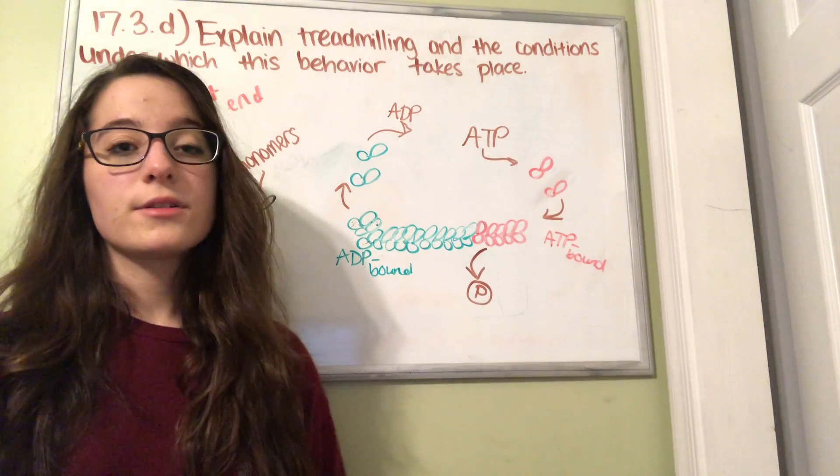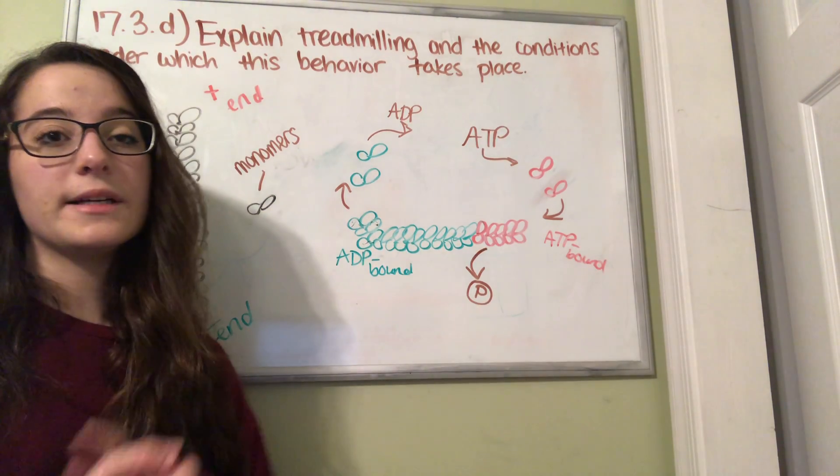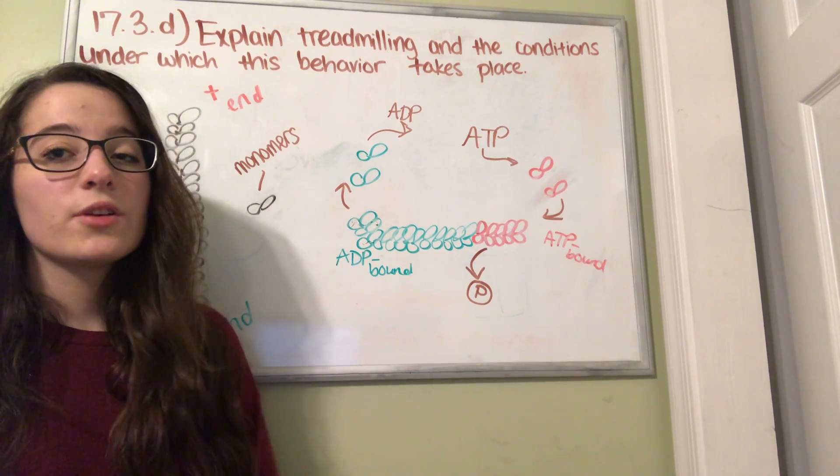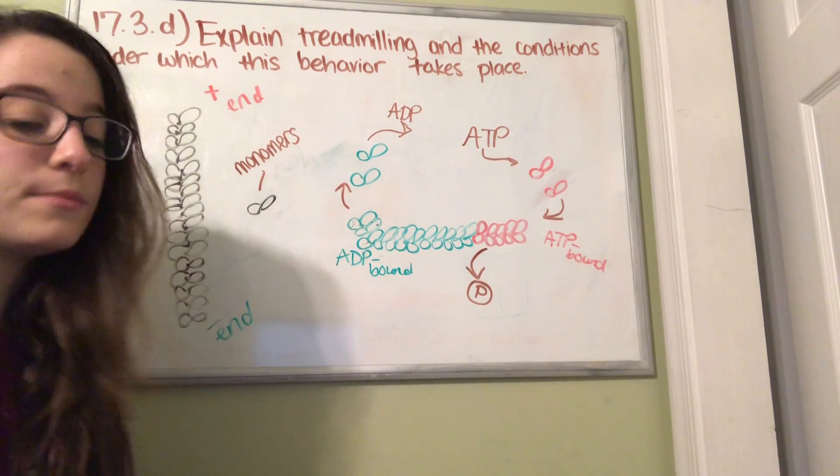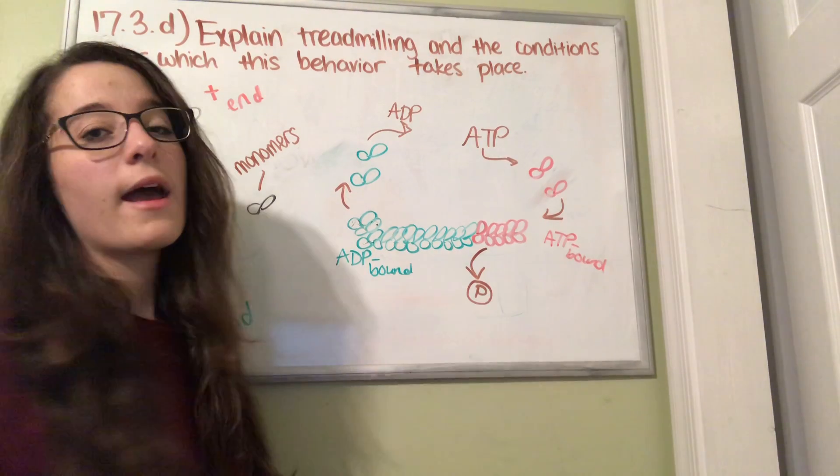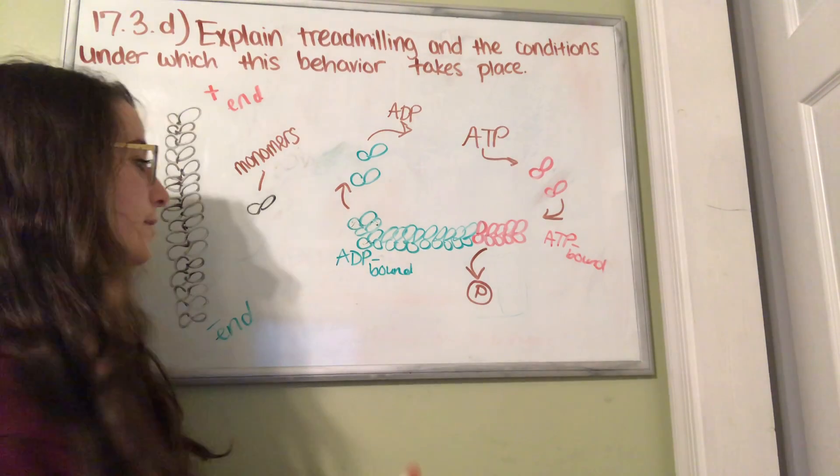This whole cycle is the process of treadmilling. Because of this process, the actin filament adds monomers to its plus end over here and takes them off of its minus end.